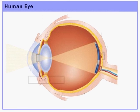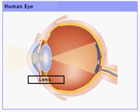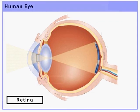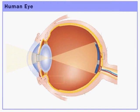As you can see, this is the lens, which forms an image on a light-sensitive screen. This light-sensitive screen is known as the retina.